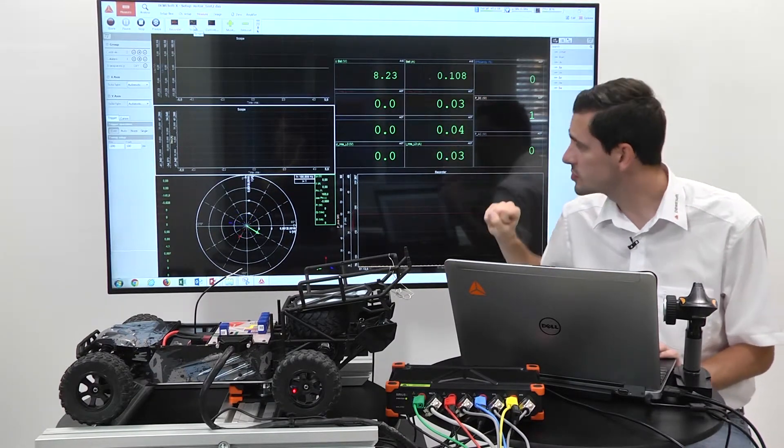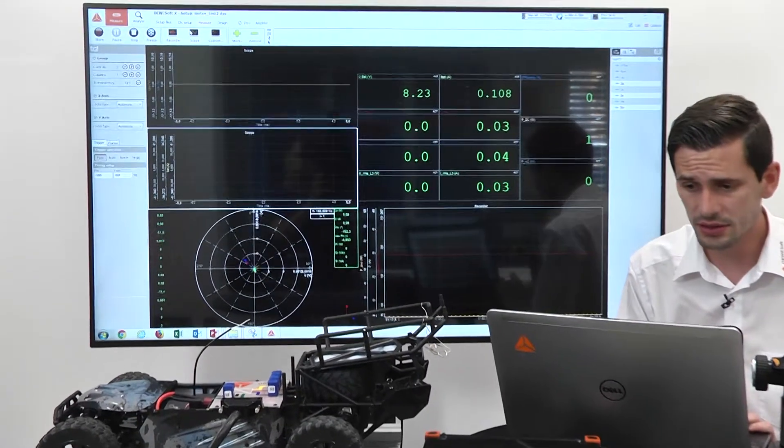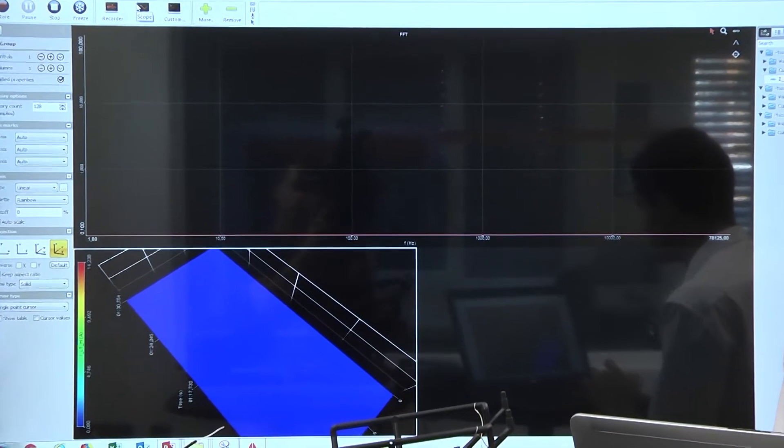So again, raw data with scope view, vector scope, recorder view, and in addition also FFT analyzers and FFT view.